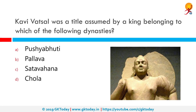Kavi Vatsal was a title assumed by a king belonging to which of the following dynasties? Correct answer is Satvahana. The name of the king is Hala, who assumed the title of Kavi Vatsal. He was a Satvahana king.